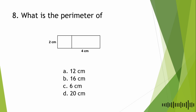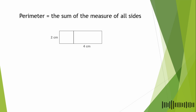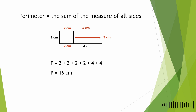For the eighth question: what is the perimeter of this figure? A. 12 cm, B. 16 cm, C. 6 cm, D. 20 cm. Perimeter is the sum of the measures of all sides. So we have 2 + 2 + 2 + 2 + 2 + 4 + 4 = 16 cm. The answer is B.